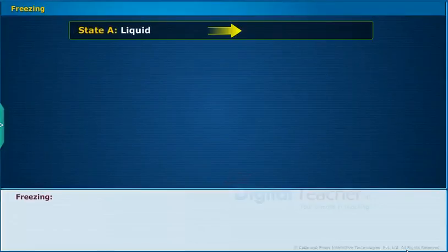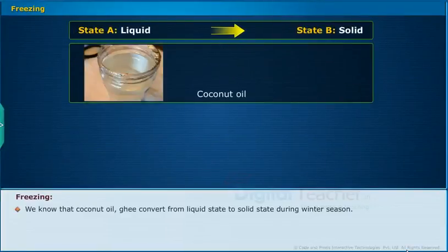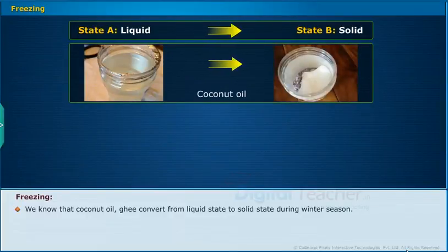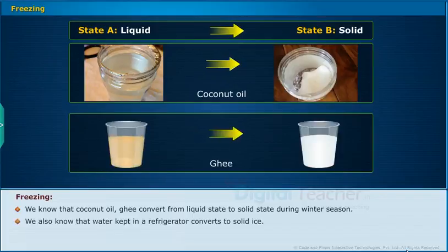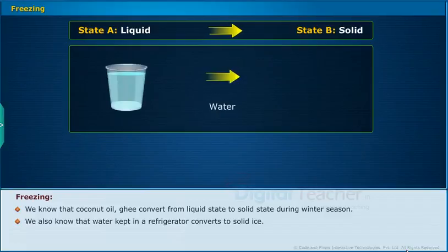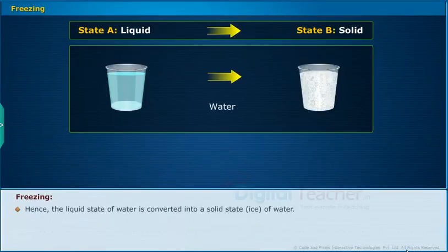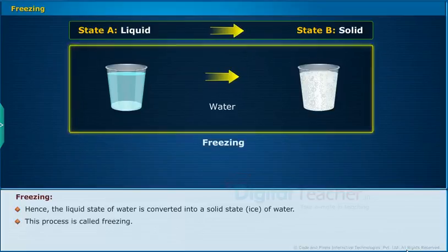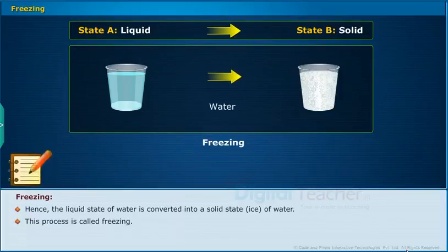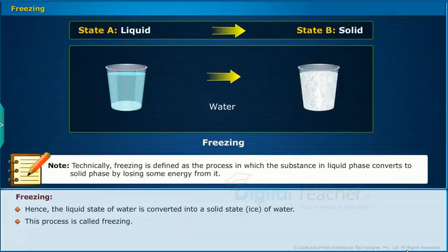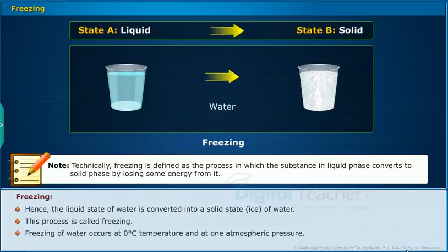Freezing: We know that coconut oil converts from liquid state to solid state during winter season. Water kept in a refrigerator also converts to solid ice. This implies that in the process of conversion from liquid to solid state, the internal energy of water decreases. Hence, the liquid state of water is converted into solid ice — this process is called freezing. Freezing is defined as the process in which a substance in liquid phase converts to solid phase by losing some energy. Freezing of water occurs at 0°C and at 1 atmospheric pressure.